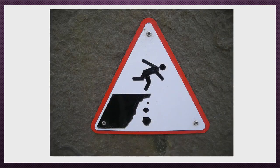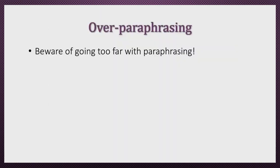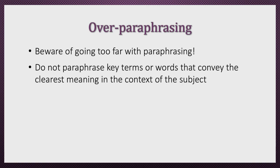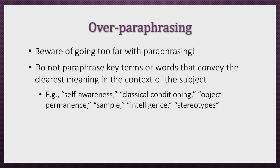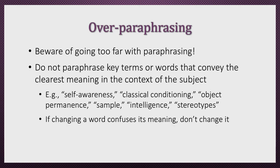Now although I have been emphasizing the practice of paraphrasing and citing, it is also important to know how not to go too far. Generally accepted and recognized names and terminology — like self-awareness, classical conditioning, object permanence, sample, intelligence, and stereotypes — should not be expressed in any other way, because doing so will muddle the meaning of what you're trying to say. Remember that one of your goals in scientific writing is to communicate your points in the clearest way possible, so using your own words when you're not supposed to will actually reduce the quality of your writing.